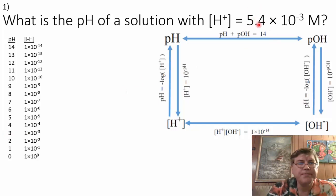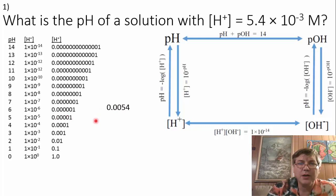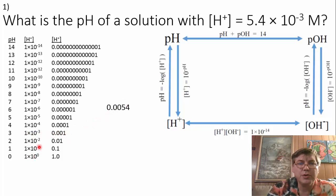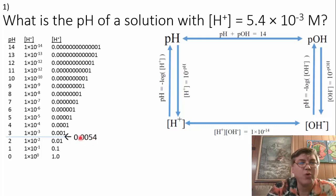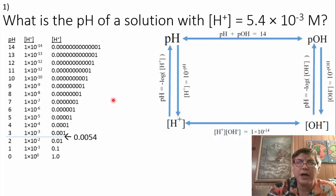We can look at 5.4 times 10 to the negative 3 and decide: is 5.4 more or less than one? Well, it's more than one. We can write it in decimal notation — .0054 — and find the closest value. 1 times 10 to the negative 3 is .001. So 5.4 times 10 to the negative 3, or .0054, is a little more than .001 but not as much as .01. So our pH is going to fall somewhere between 2 and 3 — it'll be two point something. We need to use a calculation to find out exactly.